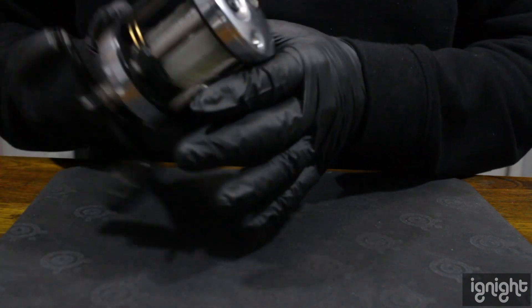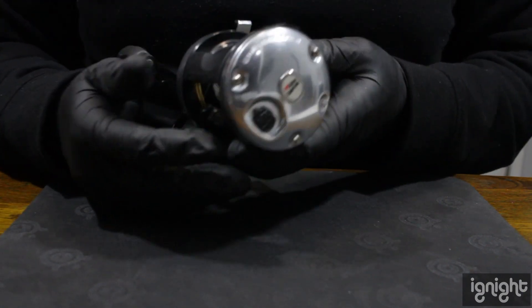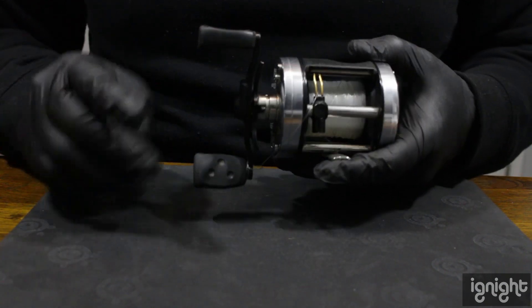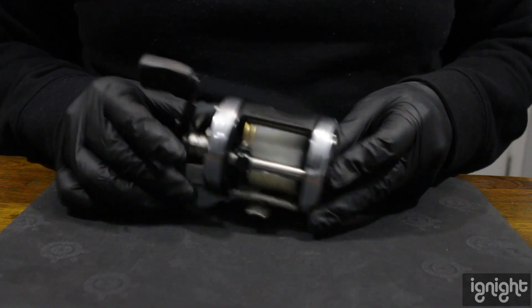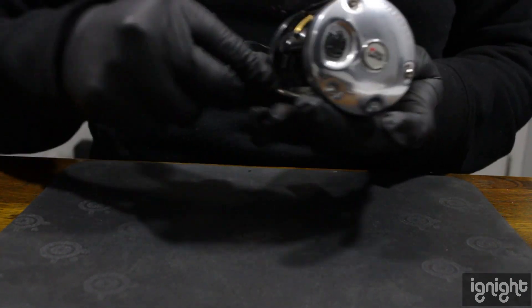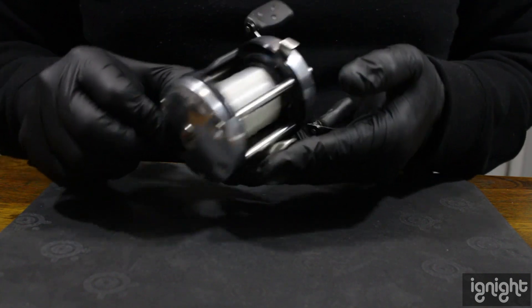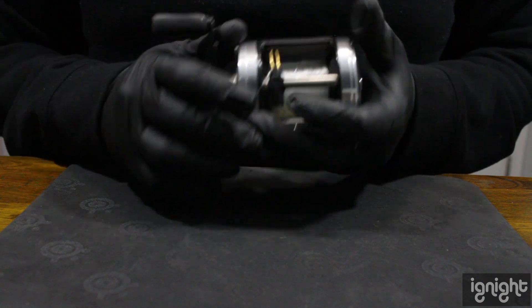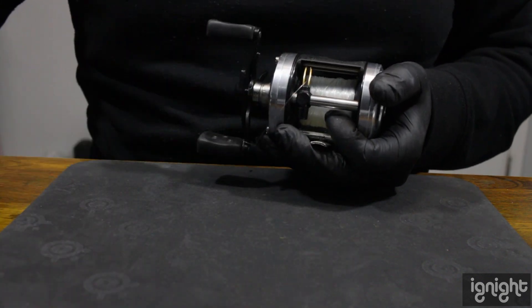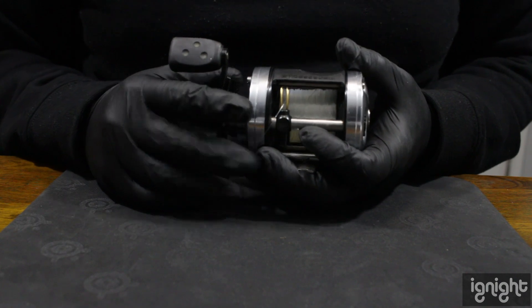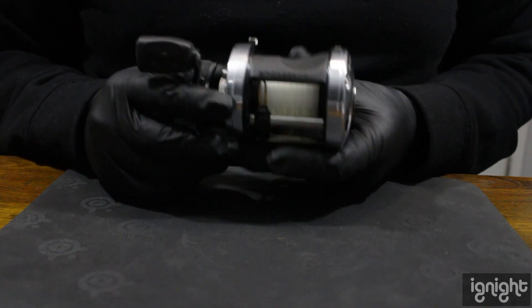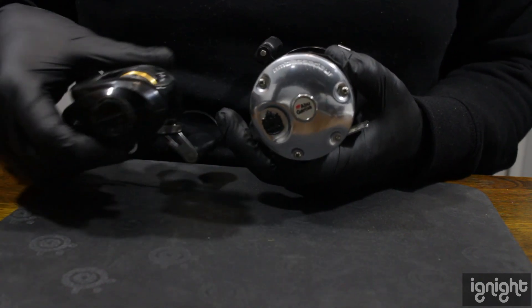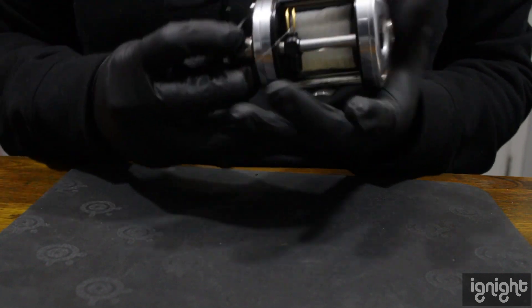Let's jump to this next one, which is this Abu Garcia. This is my first swimbait reel I bought. I didn't know nothing about swimbaits. I found this deal on Best Pro Shop and I was like, you know what, it's good enough to get me started for a good price. I can't really complain.